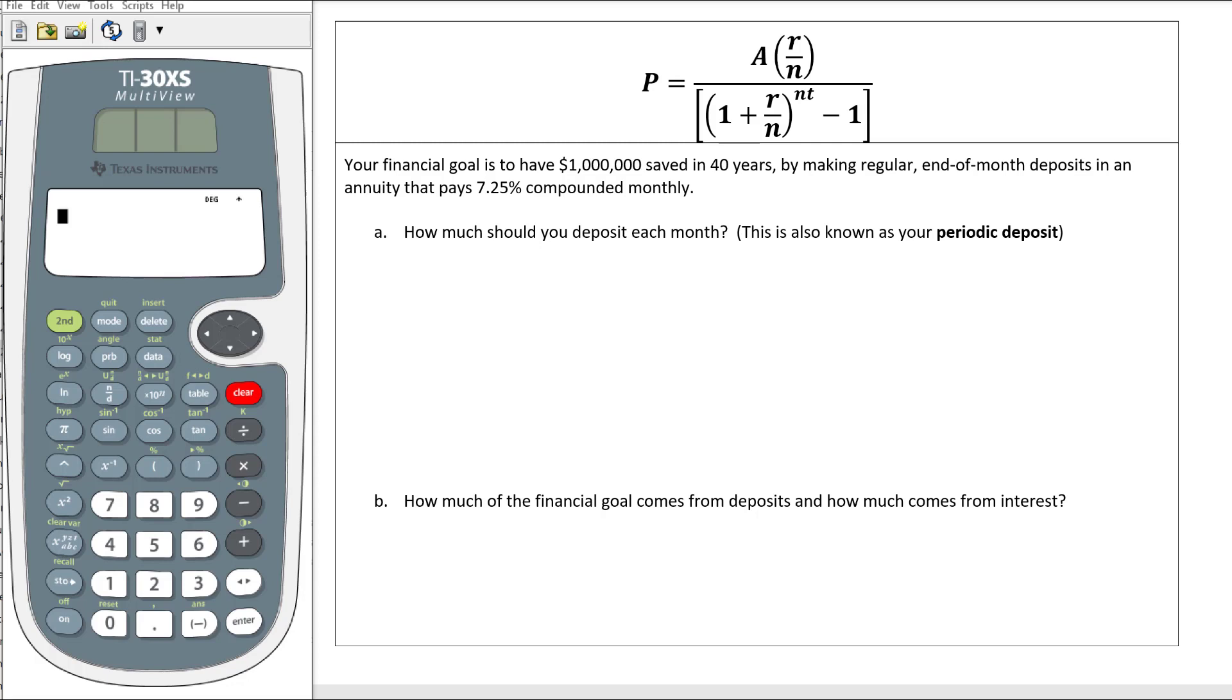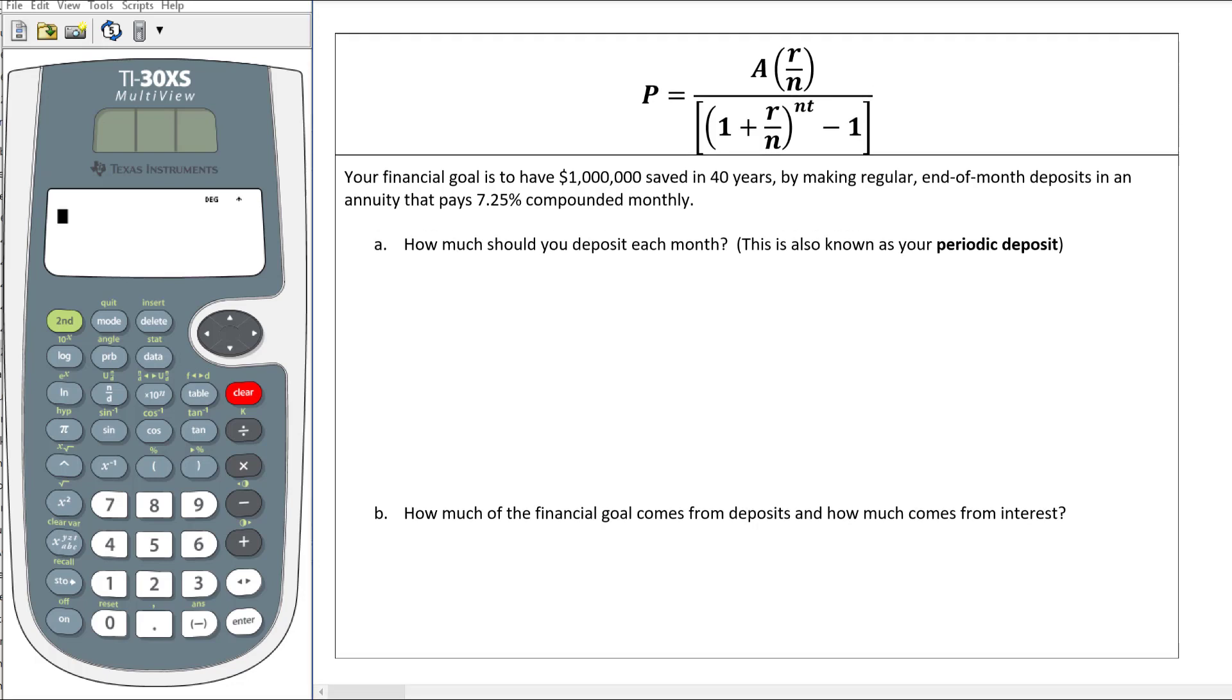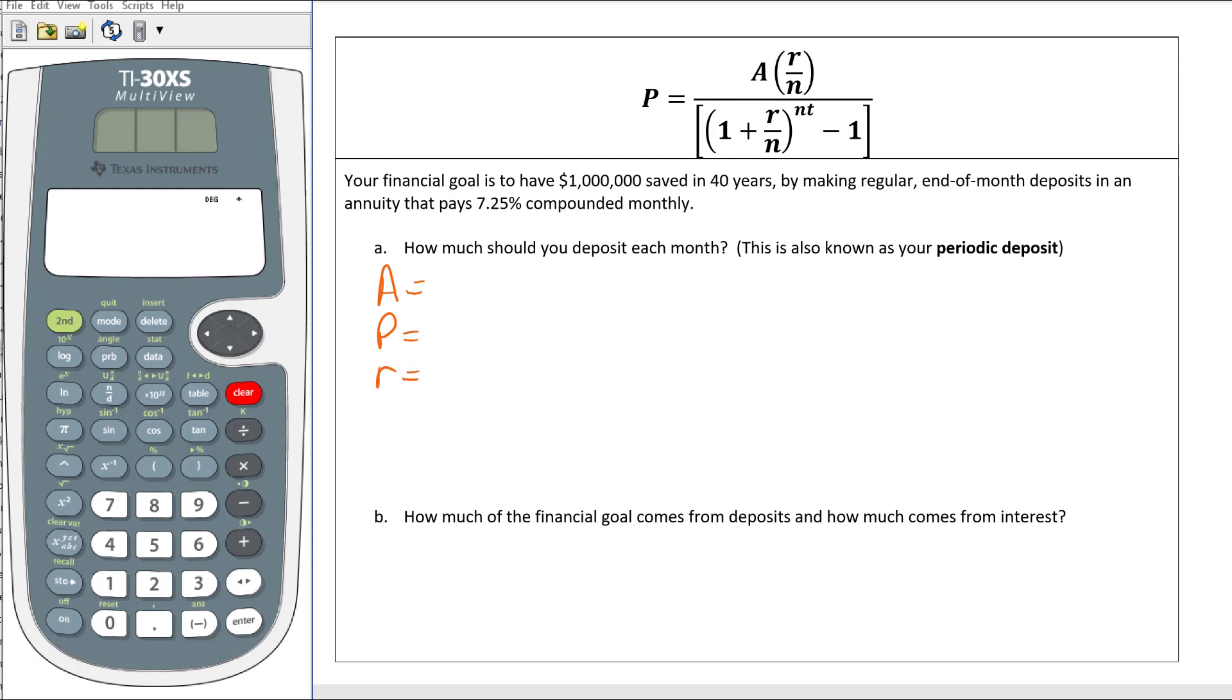This is also known as your periodic deposit, or P. We have APR, n, t, and a goal of reaching a million, so that's going to be my future value A in 40 years, so that's t, by making regular end-of-the-month payments compounded monthly, so that's 12, and my rate is 0.0725.